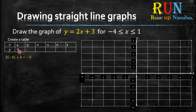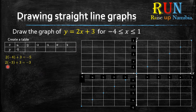You repeat this process. You go to the next column and you have negative 3 as your x value. Again, you take 2x plus 3 but substitute negative 3 as your x value. 2 multiplied by negative 3, plus 3 gives you negative 3. So that negative 3 is your y value.